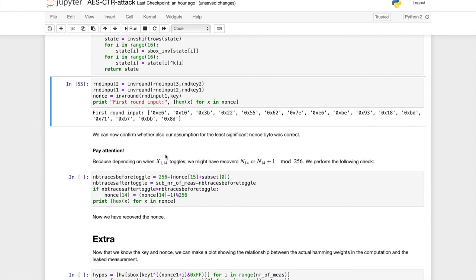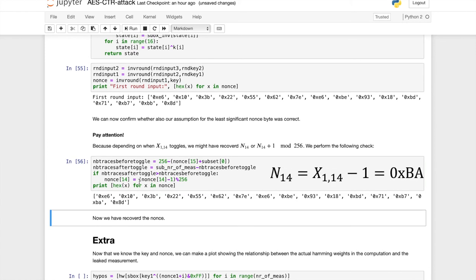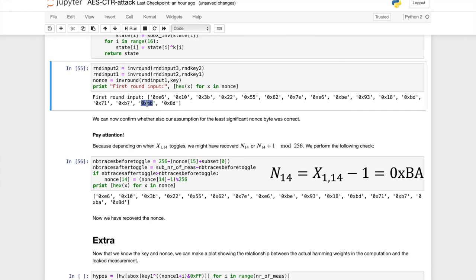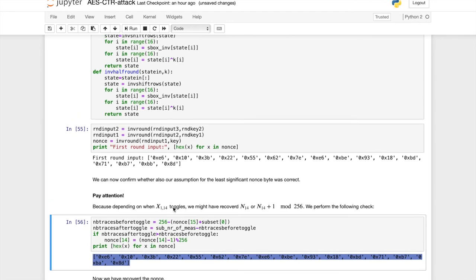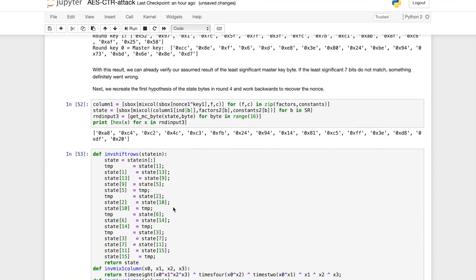So there's one thing you need to pay attention to. It's possible that when we selected a subset of traces that we selected the traces after the toggle of X14 happens. So if that's the case, then we still need to subtract one from X14. But in this case, which in this case was actually the case. So instead of 0xBB, we needed to have 0xBA. So this is it. We have recovered both the nonce and the master key.